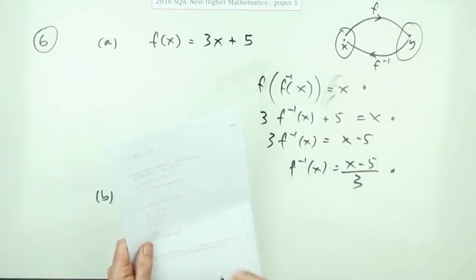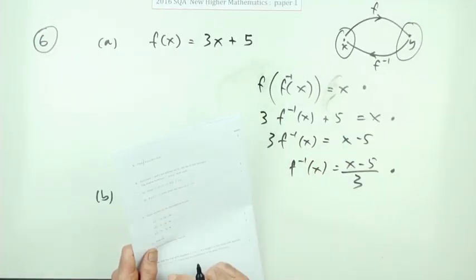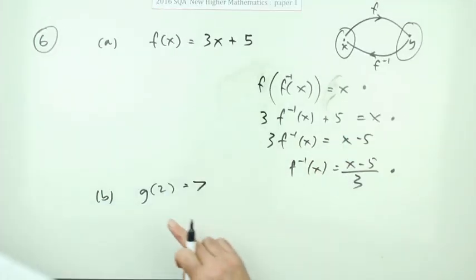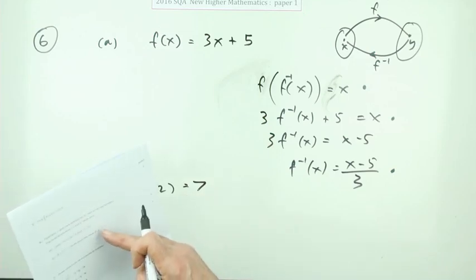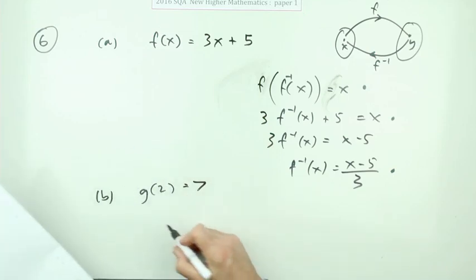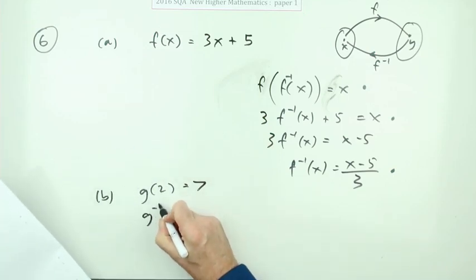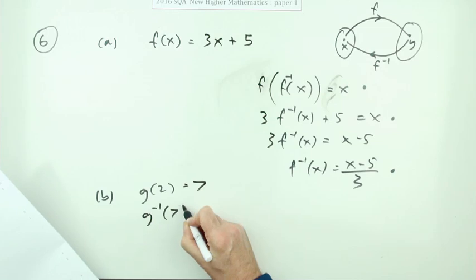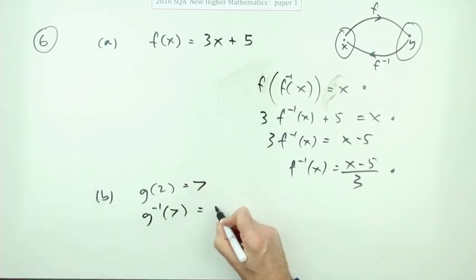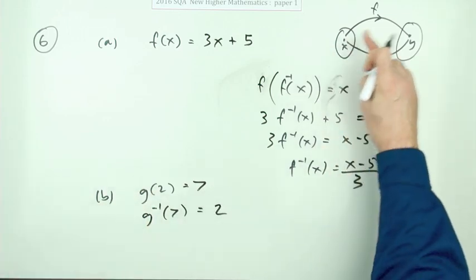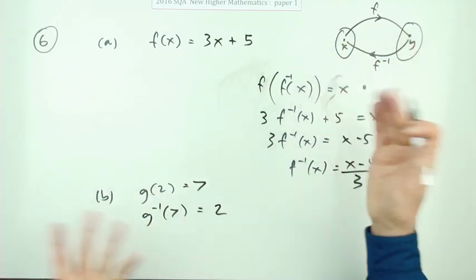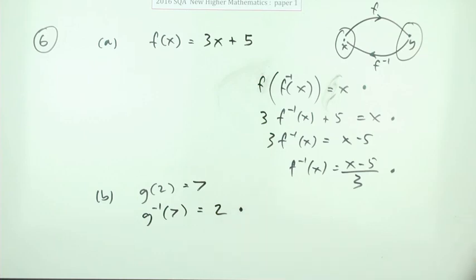Part b is worth one mark. If some function g acting on 2 produces the answer 7, what does the inverse function give when operated on 7? Obviously it takes you back to where you started — so g⁻¹(7) equals 2. That gets you the mark — it's a gift of a question.